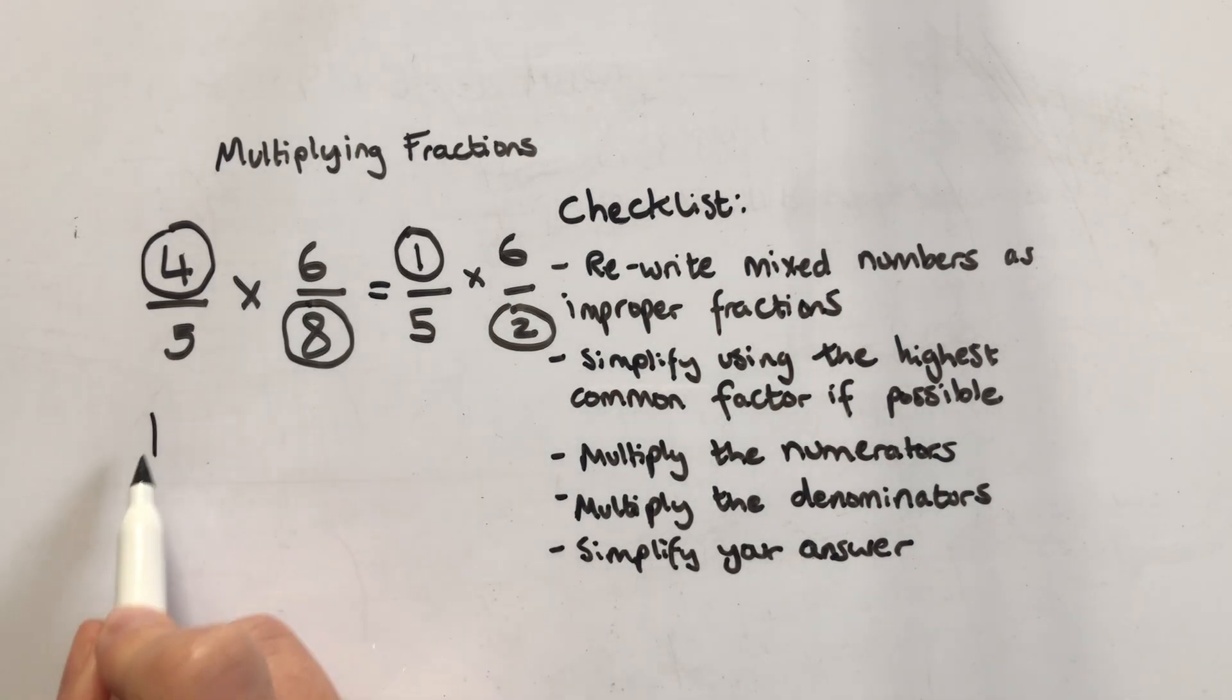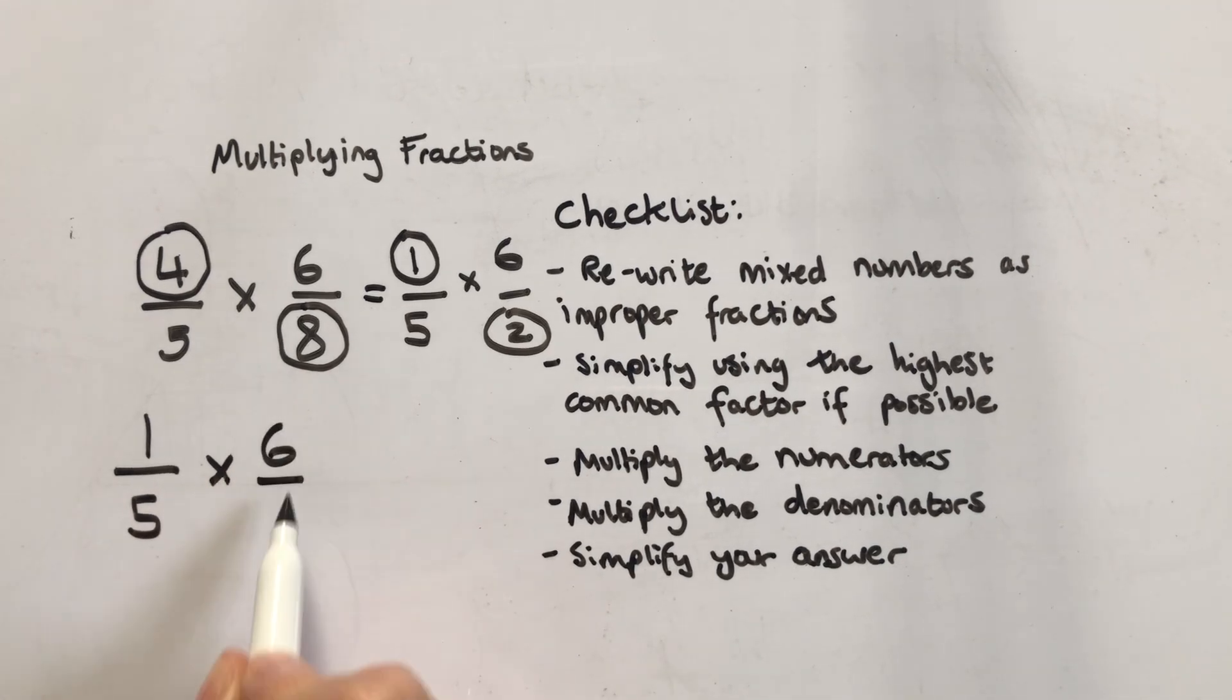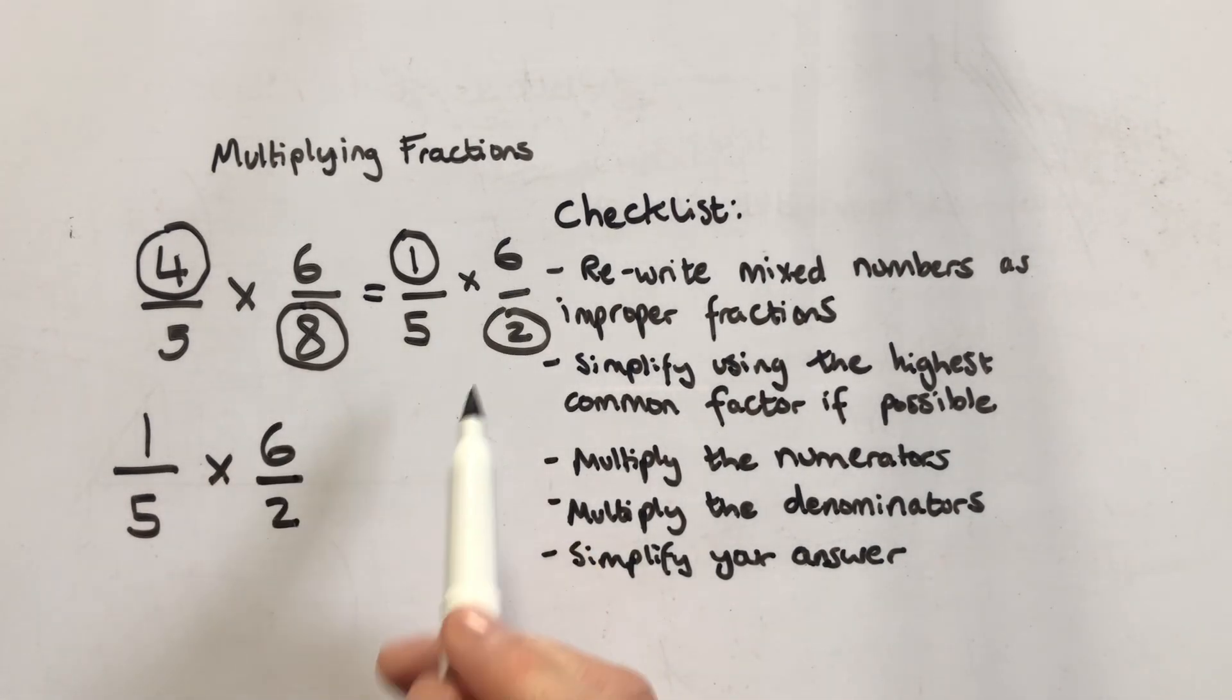Now I can do one fifth multiplied by six halves. So one times six equals six. Five times two for the denominator equals ten. I can't simplify this anymore, so the final answer is six tenths.